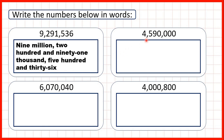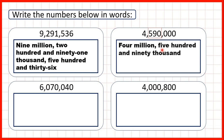Now let's look at this number here. Before the first comma we have a four, so that's four million. Then remember we look at the three digits between the commas because that tells us how many thousands we have. We have five hundred and ninety-one thousand.